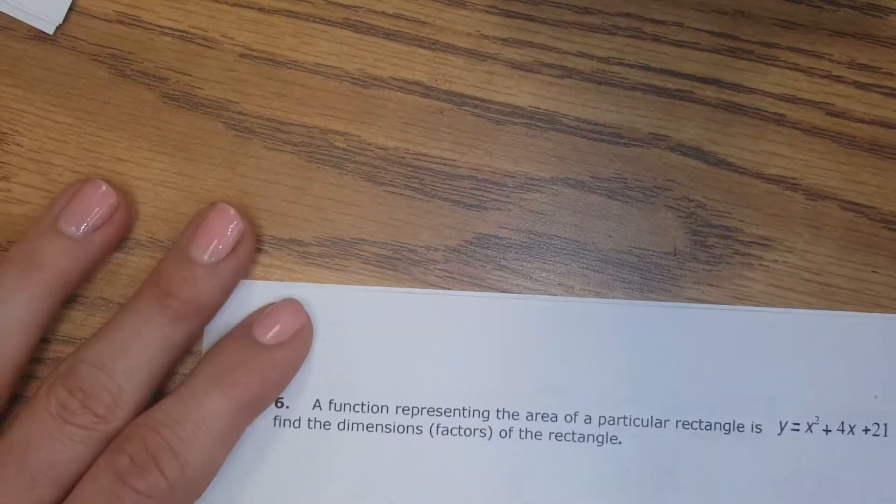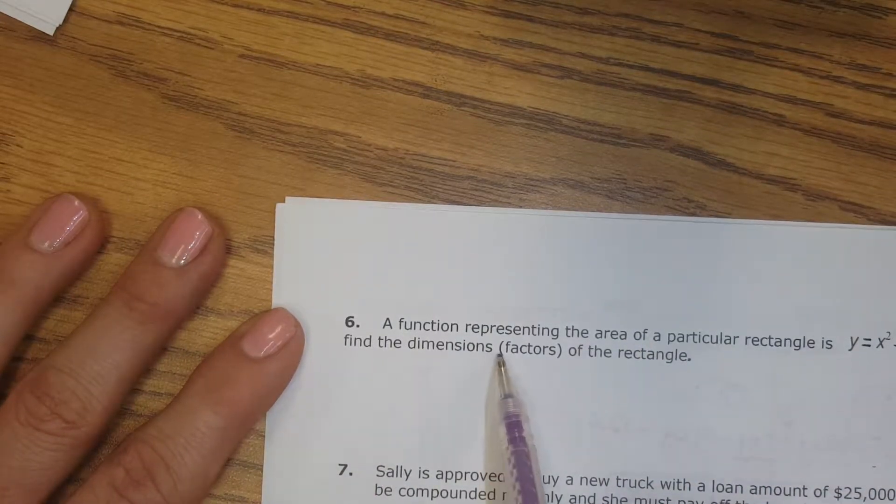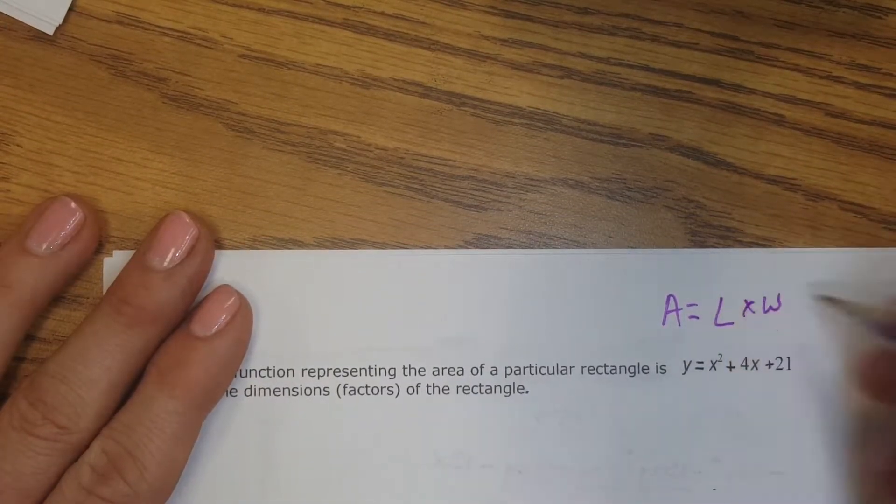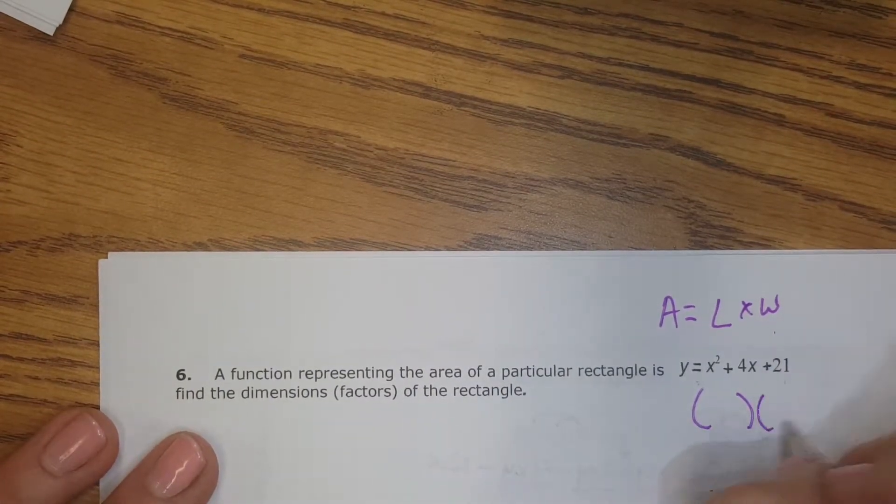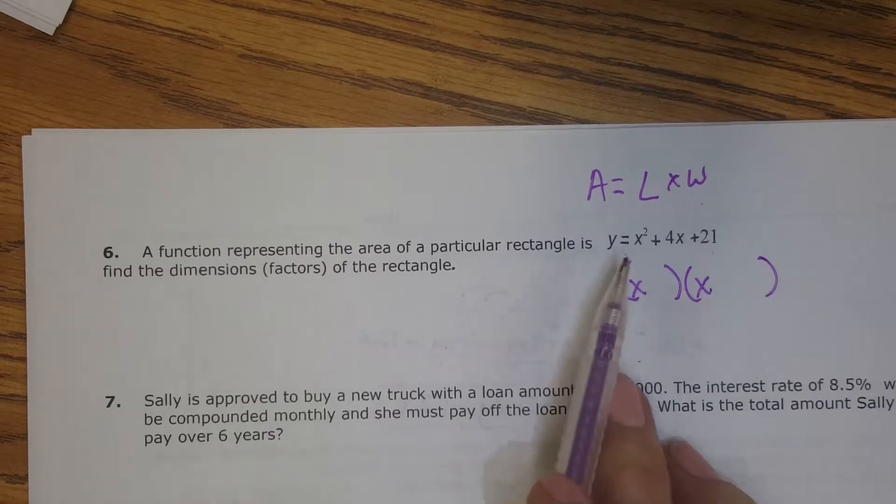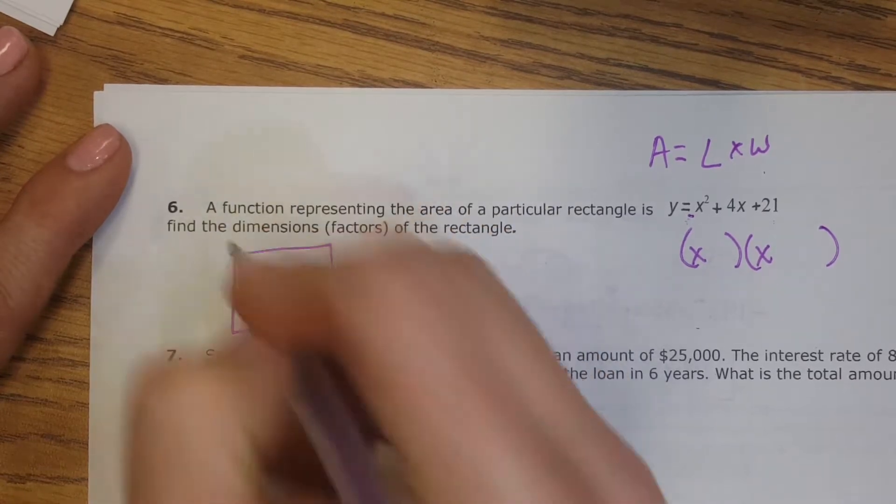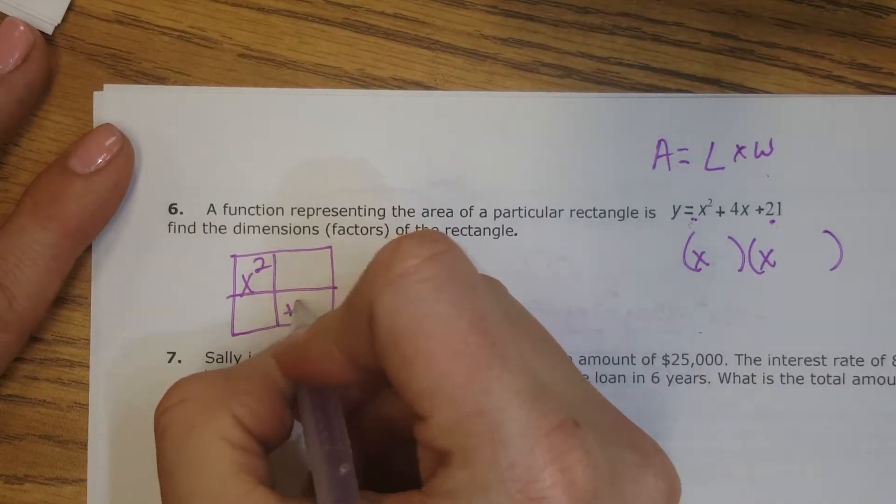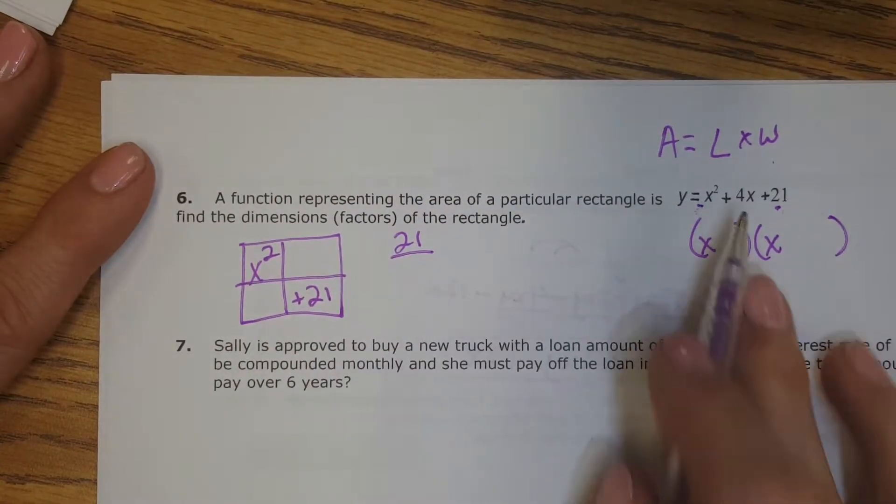Number 6. A function representing the area of a rectangle is this. Find the dimension or the factors of the rectangle. So they did length times width to get this area. This is my area. And so they're wanting us to factor it and figure out what is the length and what is the width. So I know that I'm going to have x and x to make my x squared. But really I should do the box method to make sure that I know exactly what the factors are. So that's my x squared. My last term is positive 21, so that came from there.